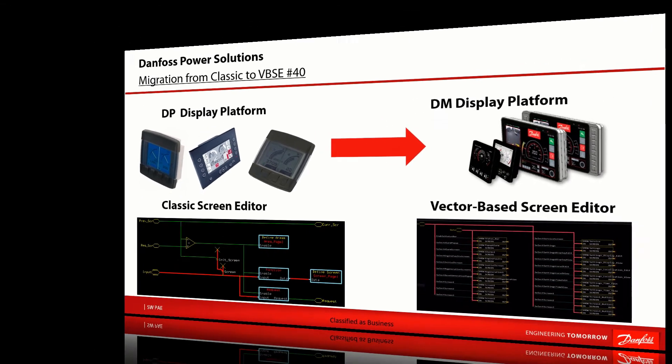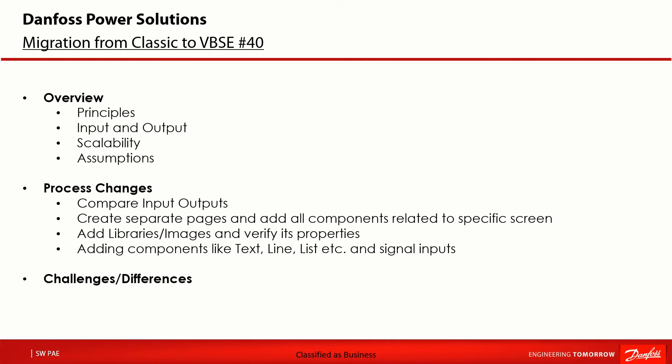The content of this video starts with an overview of the principles of the project migration: what is the input and what is the output, what are the assumptions, scalability and the image size. Followed by the process changes including signal naming, creating separate pages and components related to specific screens, adding images to screens using libraries, adjusting image settings like pixel ratio and transparency, and recalculating the X and Y coordinates to fit a new screen size without compromising resolution. At the end I will mention some challenges and differences between the classic and vector-based screen editor.